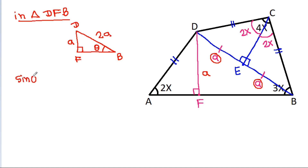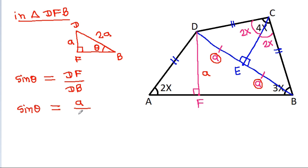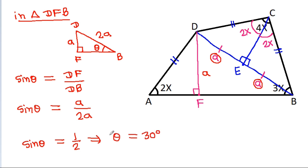So sin theta will be equal to DF divided by DB. So we get sin theta equal to 1/2. That means theta will be equal to 30 degrees.